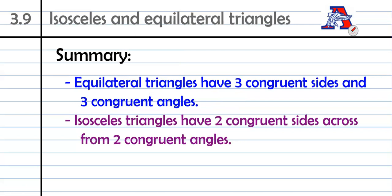So in summary, there's a lot here. You can decide if you want to write this or not. Totally up to you on this one. But equilateral triangles have three congruent sides and three congruent angles. And isosceles just have the two. Two congruent sides across from two congruent angles. If you think you're already pretty comfortable with that, maybe you can skip the summary on this one.